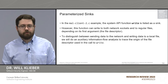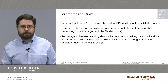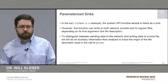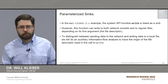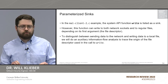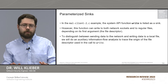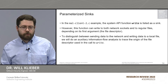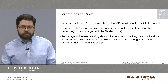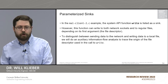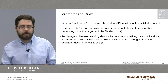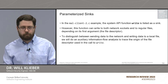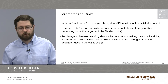In that example, the system API call write is listed as a sink. This function can be used to write to both network sockets as well as regular files, depending on its first argument — the file descriptor. So we don't want to just say there's a flow to write without knowing whether it goes to the file system or to the network. To make that distinction, we are going to do an auxiliary information flow analysis to trace the origin of the file descriptor back to either an API call that opens a regular file or one that opens a network socket, so we can report whether this is a write to the network or to the local file system.